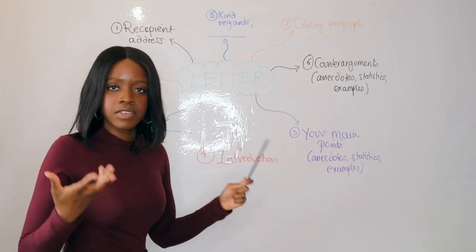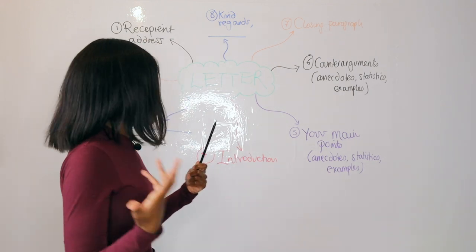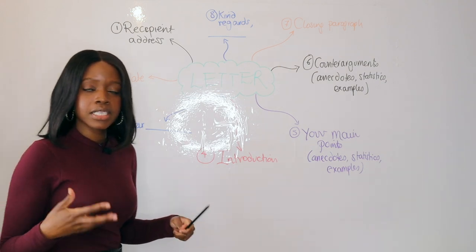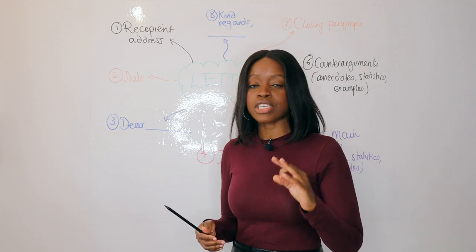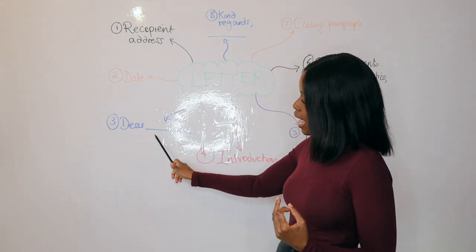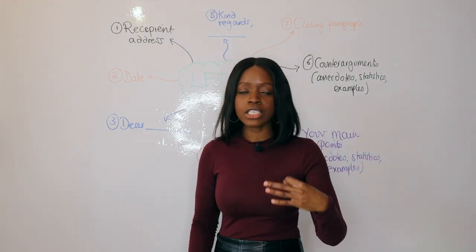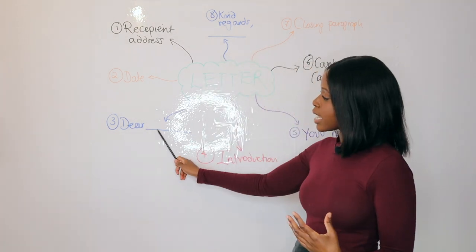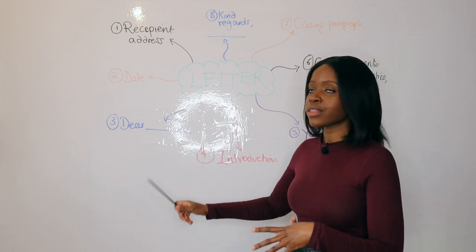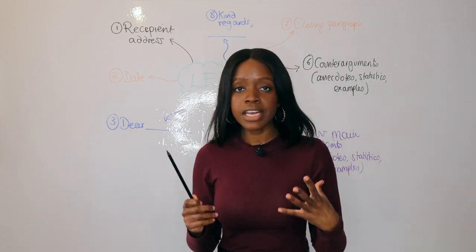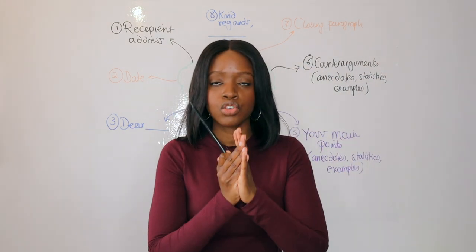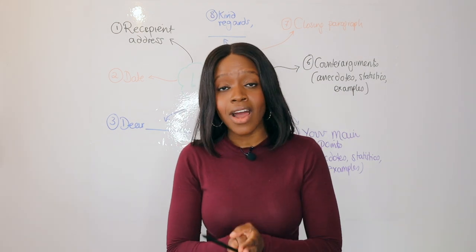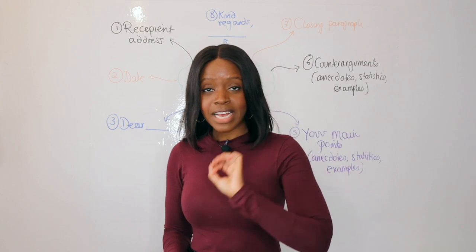So step one is the recipient address, step two is the date — 1st of December 2022. Then your third step is where you address the person you are writing to directly. In this case it's 'Dear MP Sally Smith.' If you're writing to your headmaster it would be 'Dear Mr John Smith.' Make sure you write the full name and surname and keep it formal.